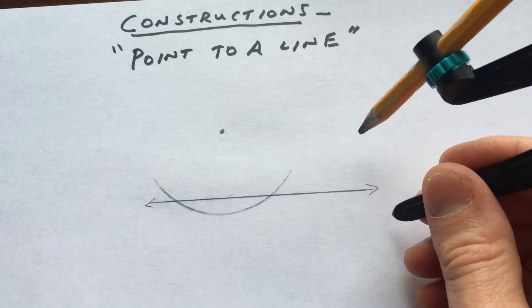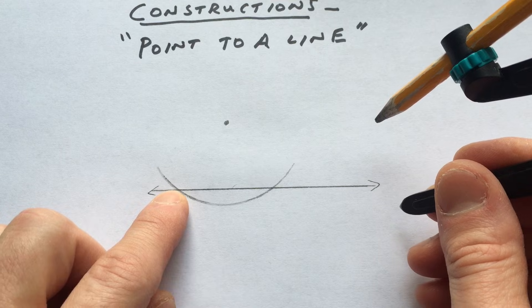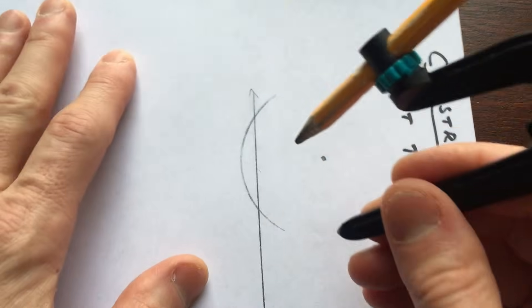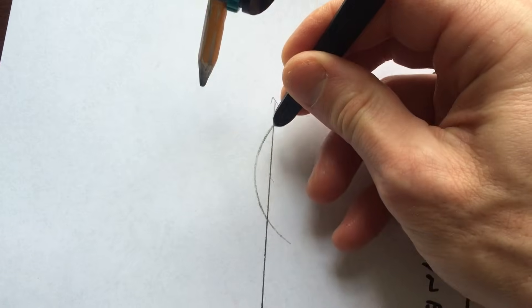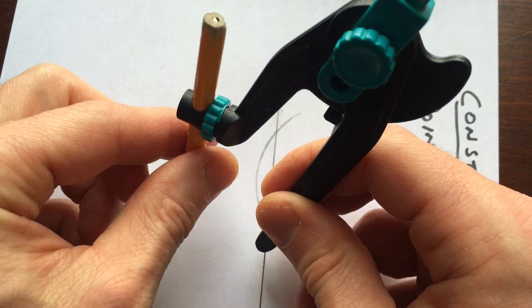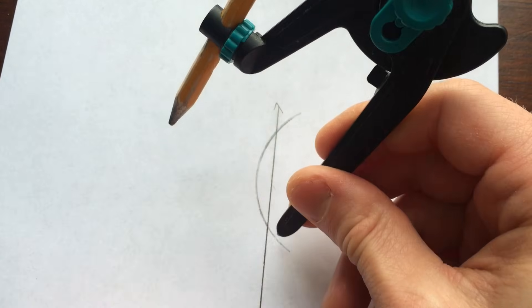So then what I'm going to do is I'm going to use this point of intersection and this point of intersection to draw two more arcs. I'm going to rotate the diagram a little bit here so you can see it, and I'm going to use this point and this point. Now you can change how open the compass is at this point.